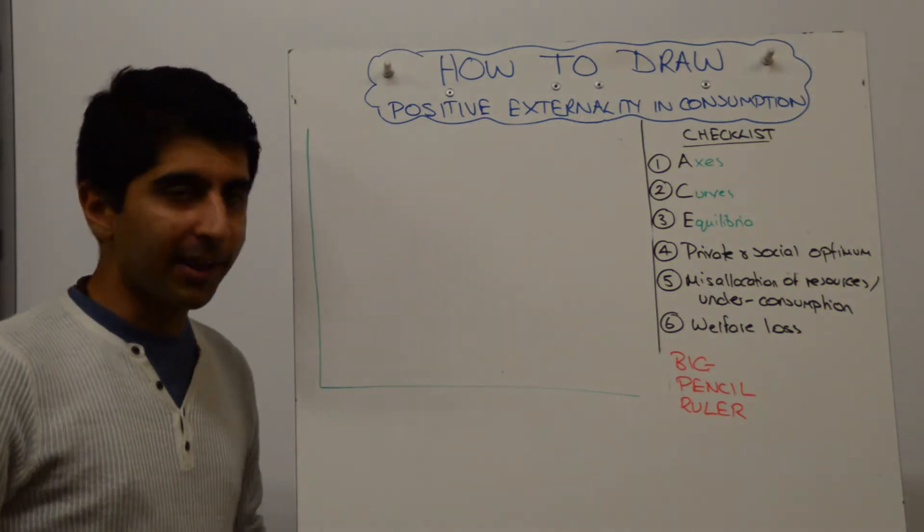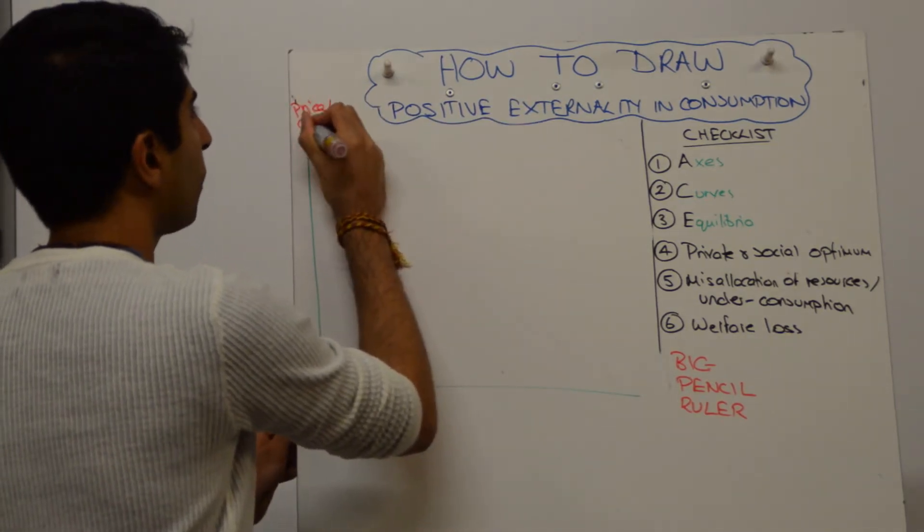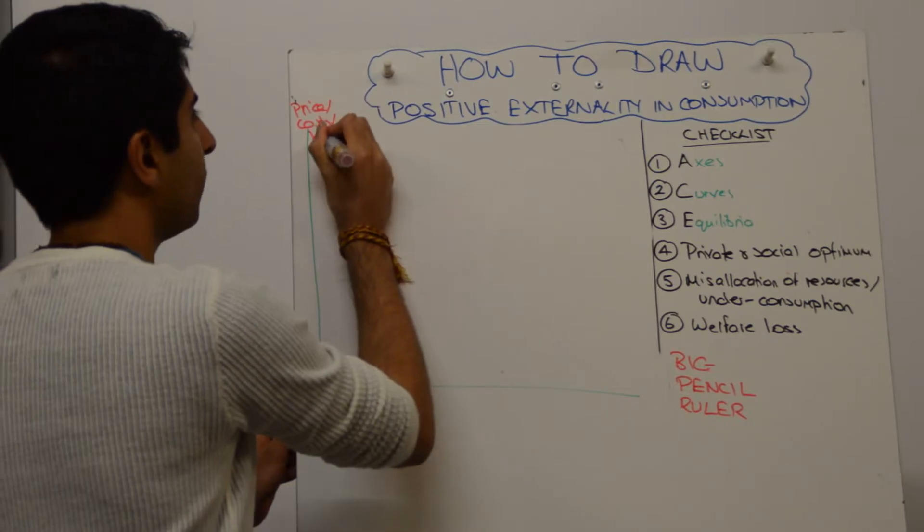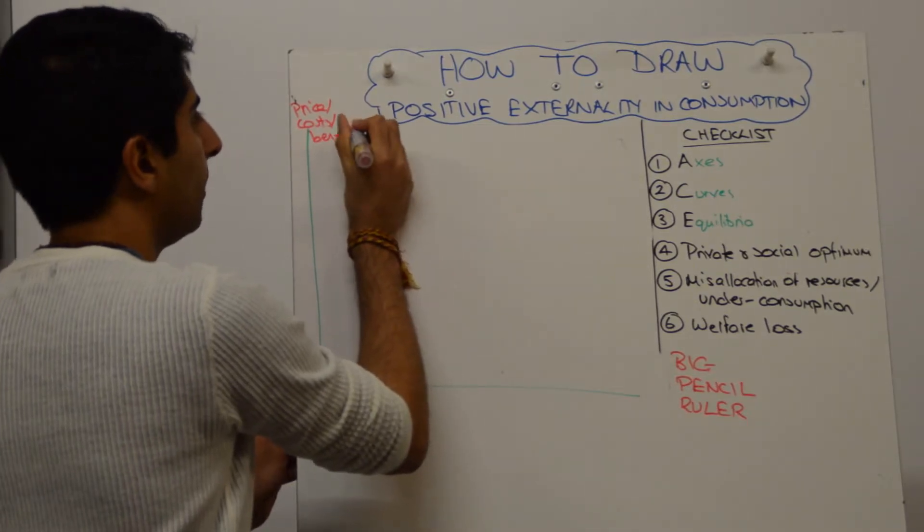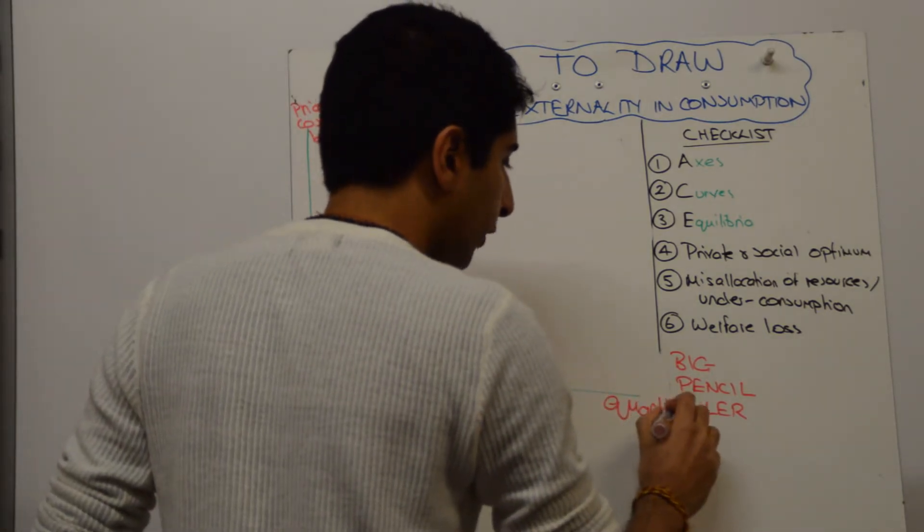We always start with labeling axes. So with market failure diagrams, it's always on the y-axis: price, costs and benefits. We're showing all three, make sure all three are put on the y-axis. We have quantity, as always, and if you know the market, then apply it on the axis.